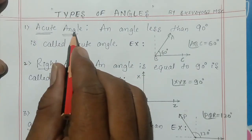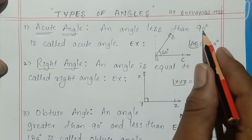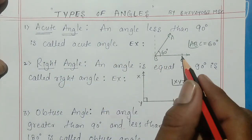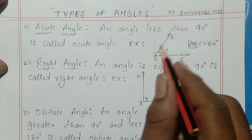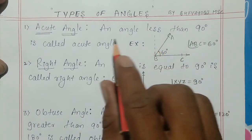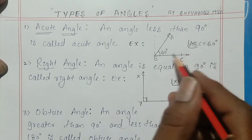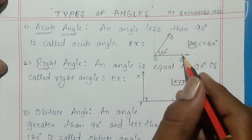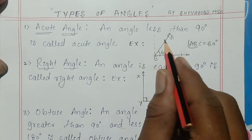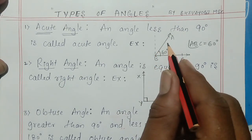The first type is acute angle. An acute angle means an angle less than 90 degrees. For example, angle ABC is 60 degrees. The definition is: an angle less than 90 degrees. From here to here is 90 degrees — less than this is said to be an acute angle.